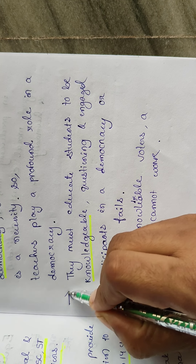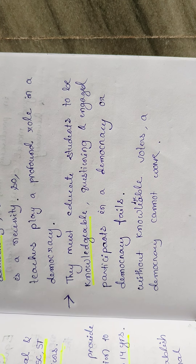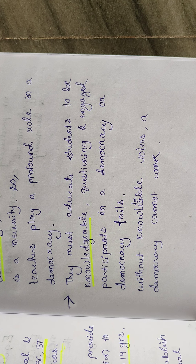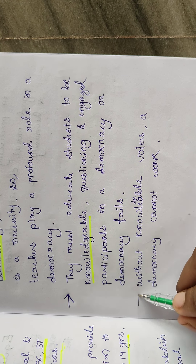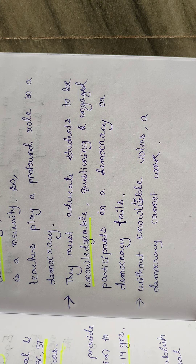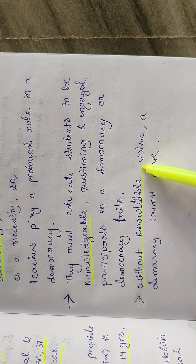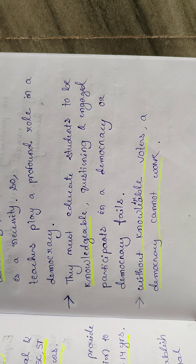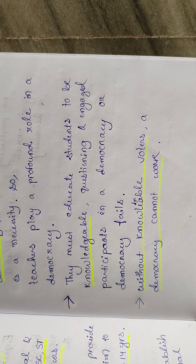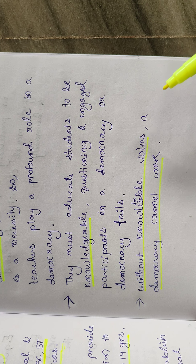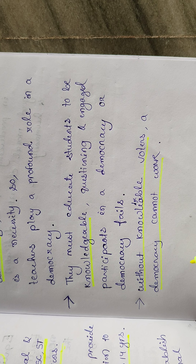If there is any mistake in democracy, students will question it — they will ask why it is happening. So who teaches all this? Education teaches it, and who helps education? The teacher helps. Without knowledgeable voters, a democracy cannot work. If students are not knowledgeable, they will vote for whoever tells them to. Voters must be knowledgeable, otherwise democracy — which means rule by the people — will not function.